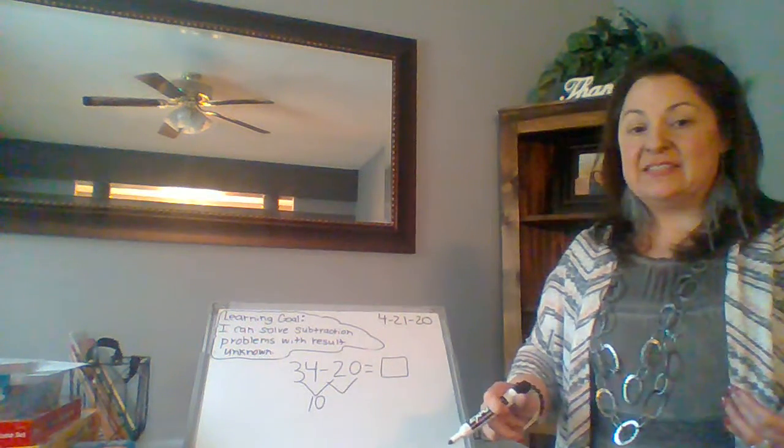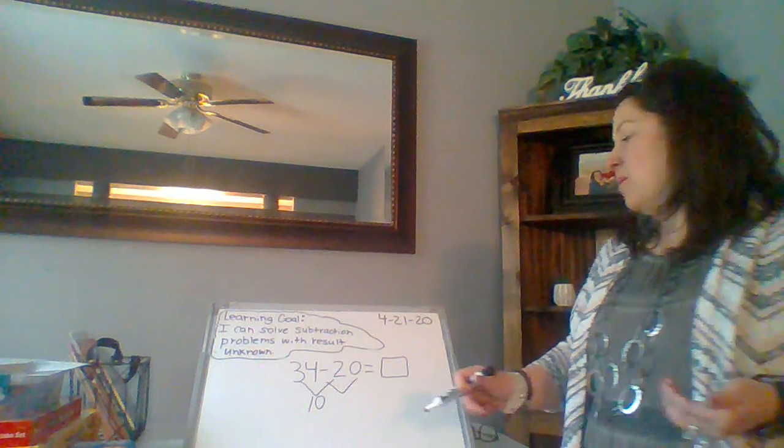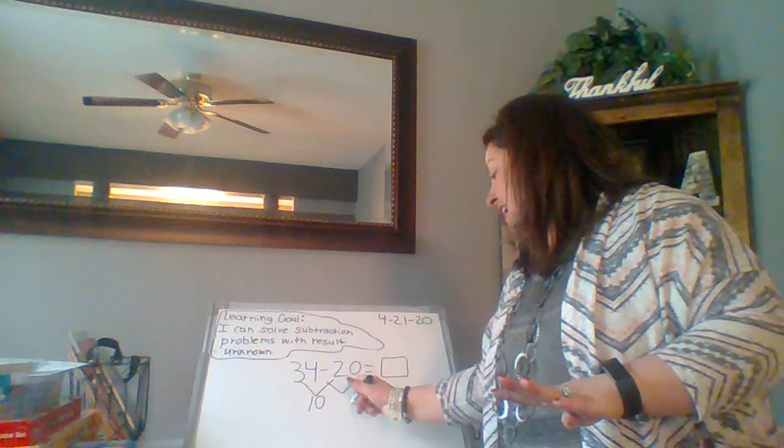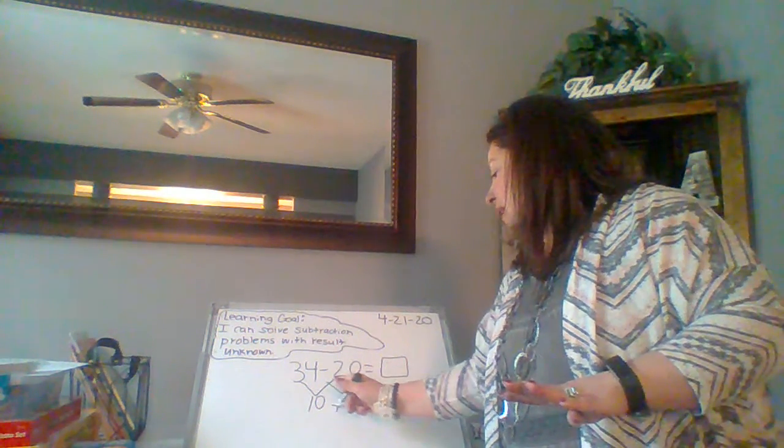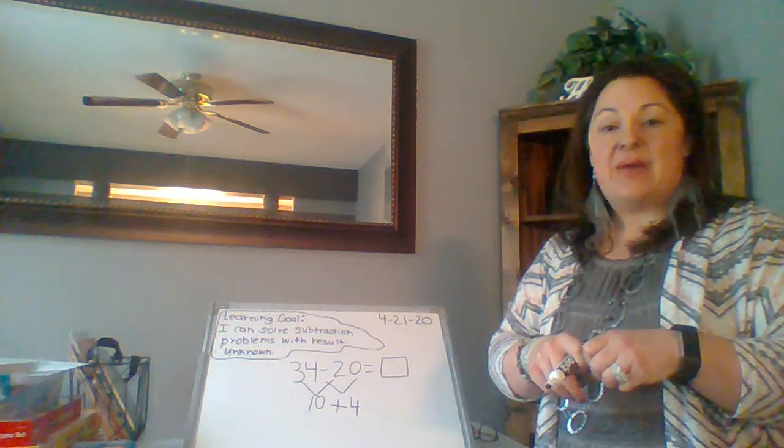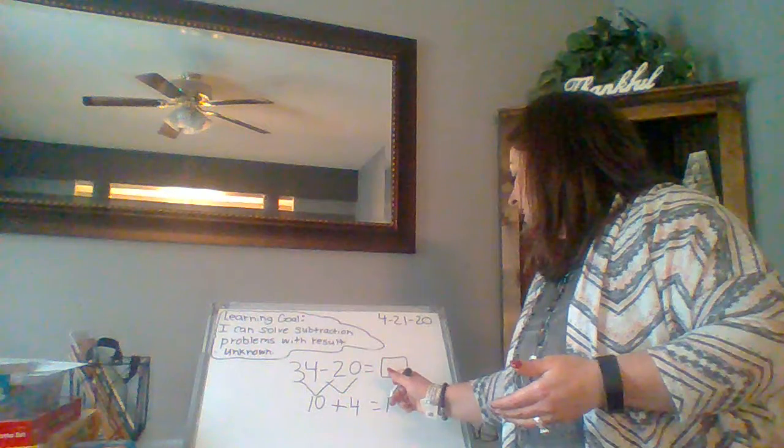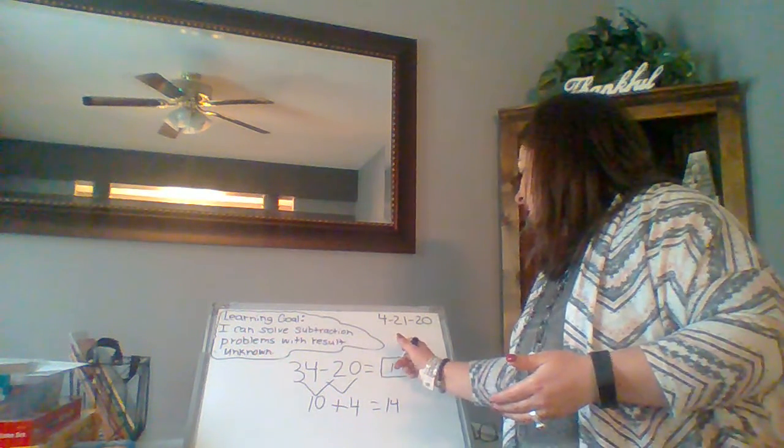If I have four 1s and I take away zero 1s, that still leaves me with four 1s, doesn't it? I didn't take any away. So I need to put my 10s and my 1s back together to get that final answer. So what is 10 plus 4? It's 14.